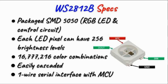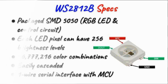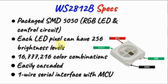The WS2812B is packaged in a 5050 SMD which contains the RGB LED and the control circuitry. Each LED pixel can have 256 brightness levels, and combining the three colors we can get 16 million color combinations. The WS2812B can easily be cascaded and it is interfaced with a microcontroller using a one-wire serial connection.